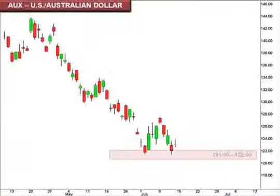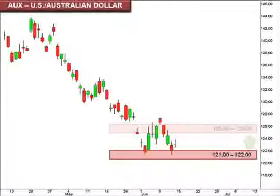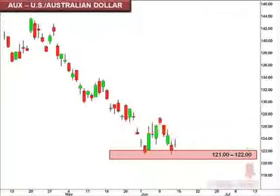The U.S. dollar is also testing a key support level against the Australian dollar, as seen here in the ISE FX Options pair value, AUX. After giving back the previous week's gains, a bounce here will likely meet once again with resistance back in that 125–126 focal zone. If the U.S. dollar continues to lose strength against the Australian dollar, a break below 121 opens the window for a drop into that 115–117 box.